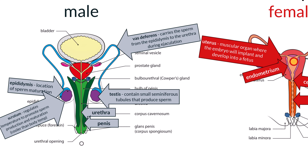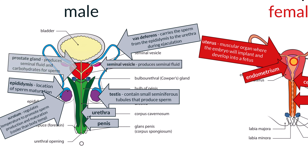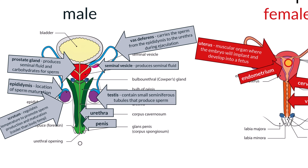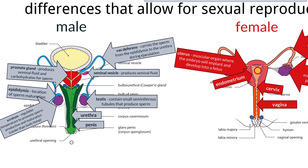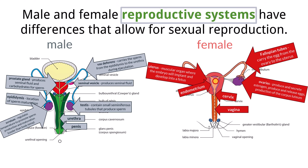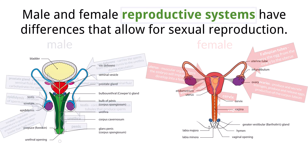There are glands that produce fluid for the semen. The seminal vesicles produce seminal fluid, as does the prostate gland. The prostate gland sits at the base of the bladder, producing much of the seminal fluid as well as carbohydrates for the sperm. For the exam, you need to be able to label each of these structures and state their functions.